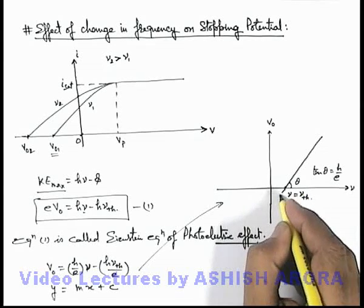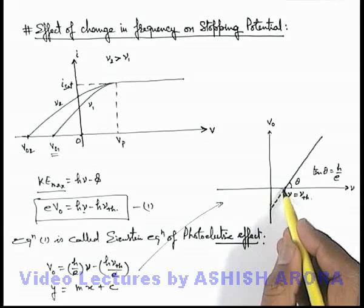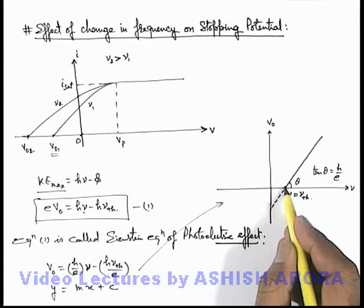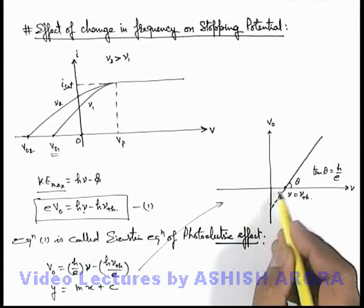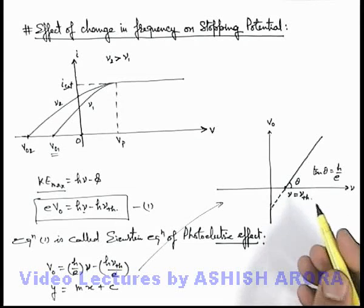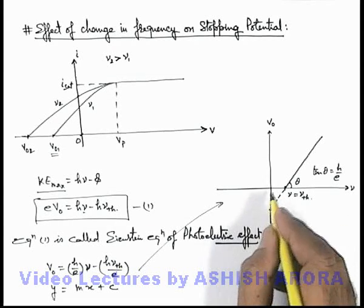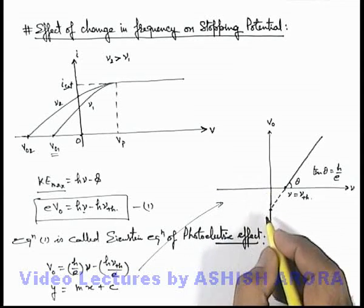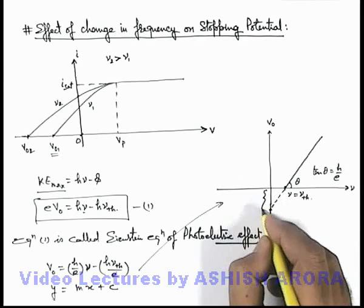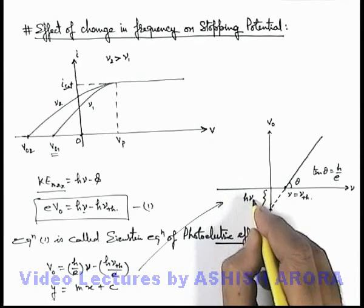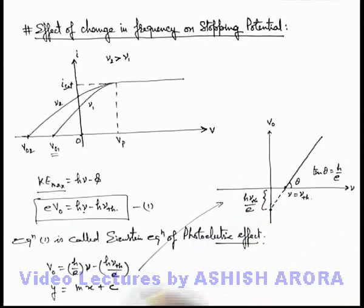And if the line is virtually extended, because we cannot draw a solid line as that a frequency less than threshold frequency, no practically photoelectric effect exists. In this situation the intercept on the axis of stopping potential this will be h nu threshold by e, because here c is the intercept on y axis.